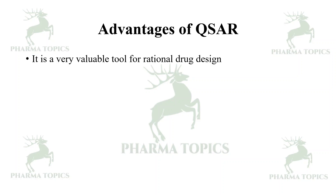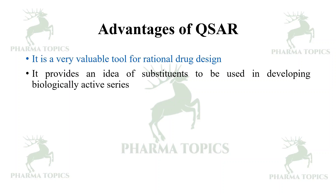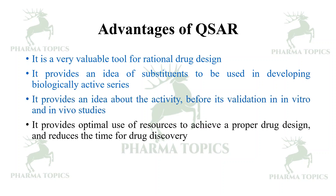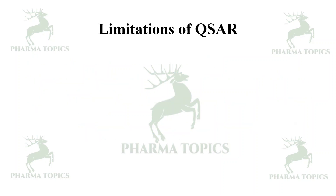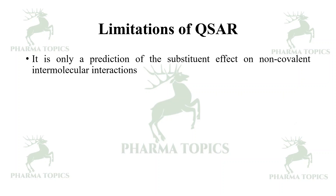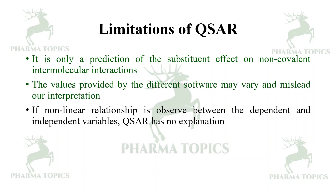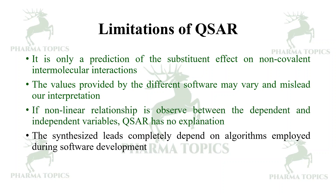The advantages of QSAR include: it is a valuable tool for rational drug design; it provides ideas about substituents used in developing biologically active series; it provides an idea of activity before in vitro and in vivo validation; and it optimizes resources and reduces time for drug discovery. Limitations include: it only predicts substituent effects on non-covalent intermolecular interactions; values from different software may vary and mislead interpretation; and if a non-linear relationship exists between dependent and independent variables, QSAR has no explanation.